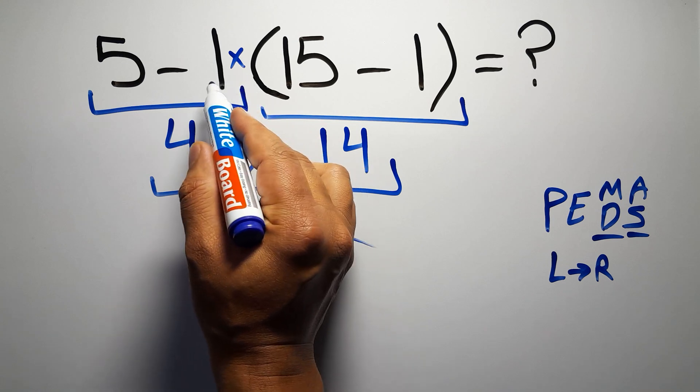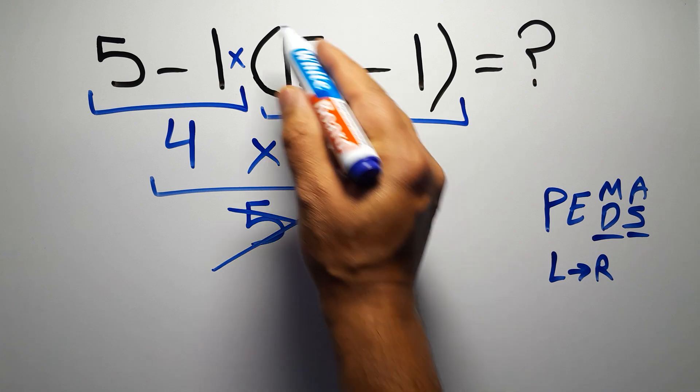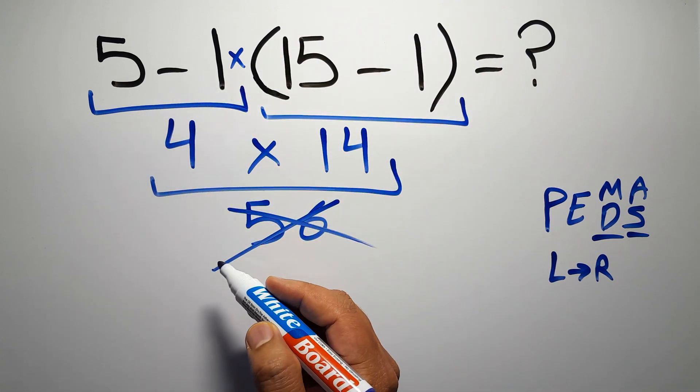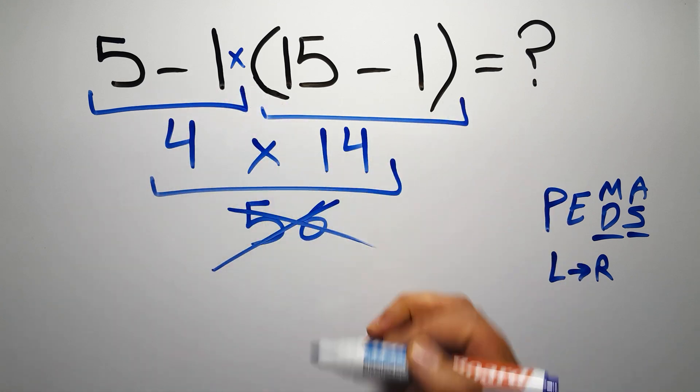We usually don't write the multiplication sign for brevity. So according to PEMDAS, first we have to do this parentheses, then this multiplication, and finally this subtraction. If we do this subtraction before this multiplication or this parentheses, it is wrong.